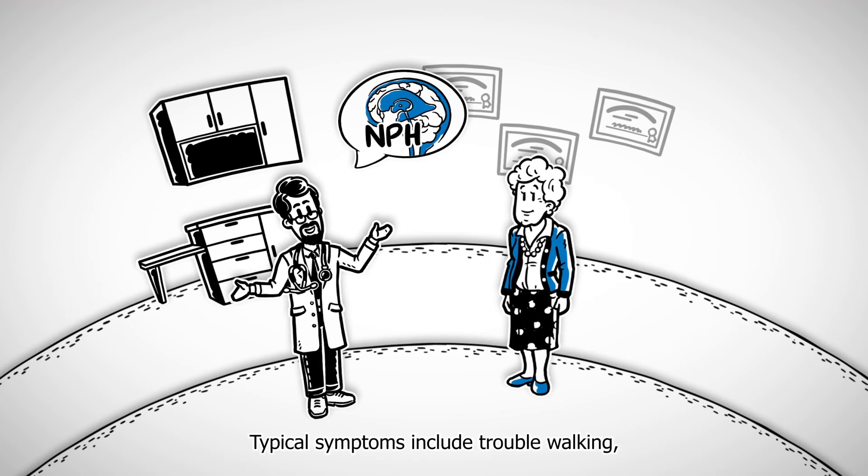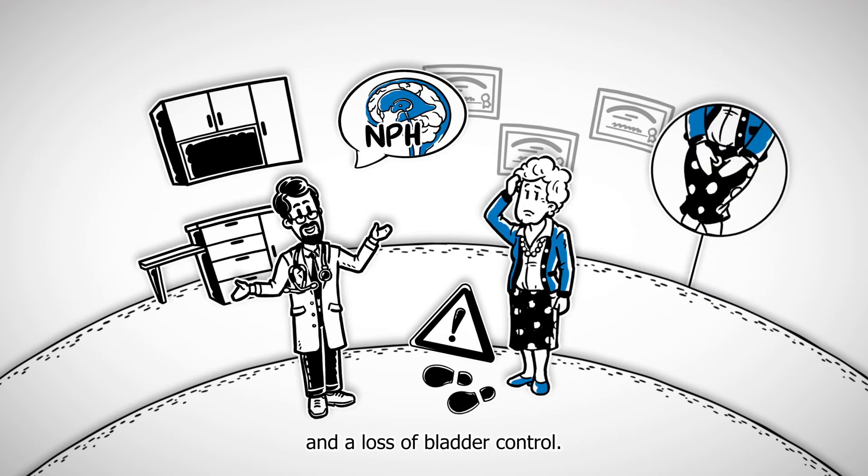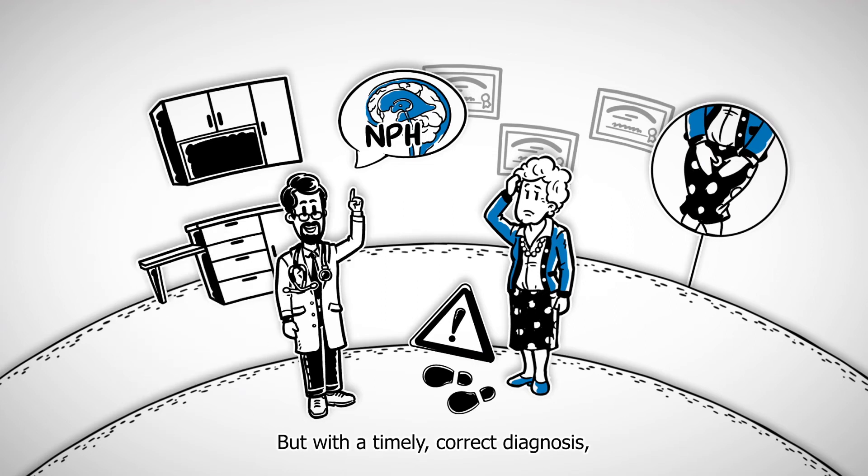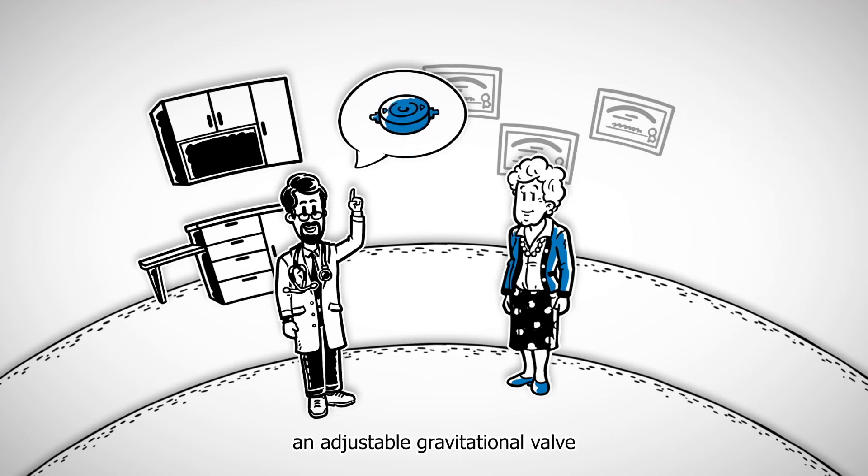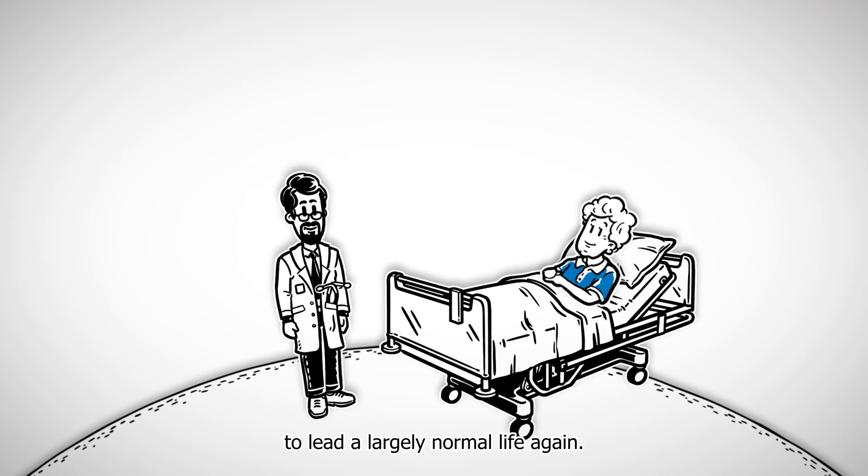Typical symptoms include trouble walking, symptoms of dementia, and a loss of bladder control. These are often misattributed to Alzheimer's or Parkinson's disease. But with a timely correct diagnosis, an adjustable gravitational valve can allow Erica to lead a largely normal life again.